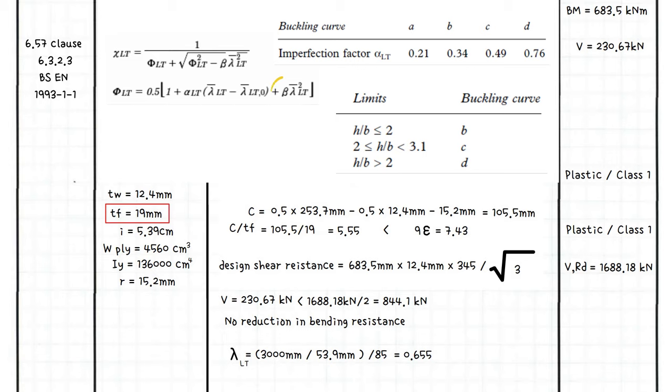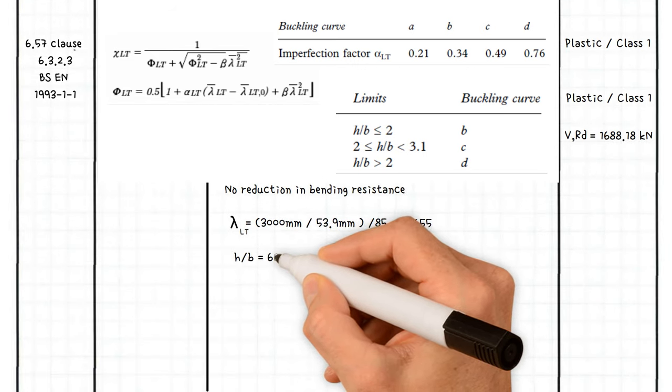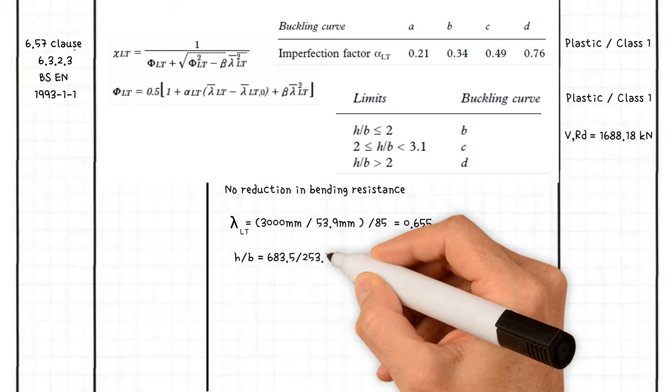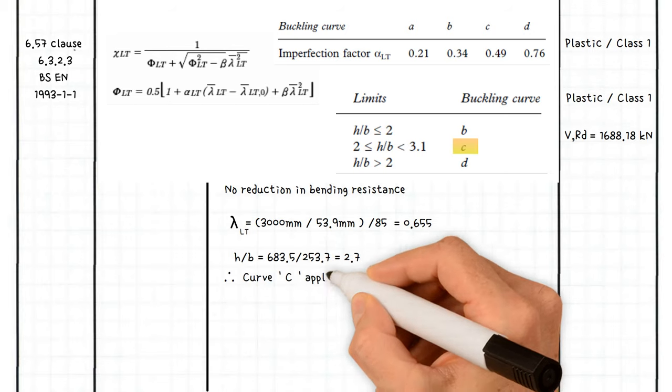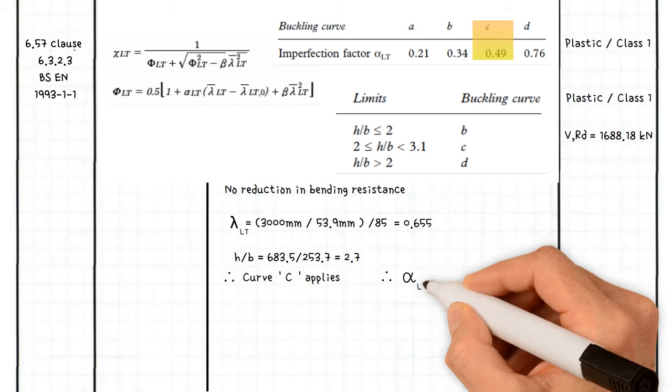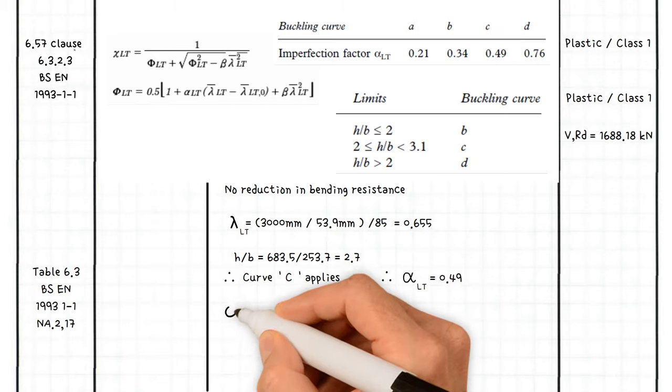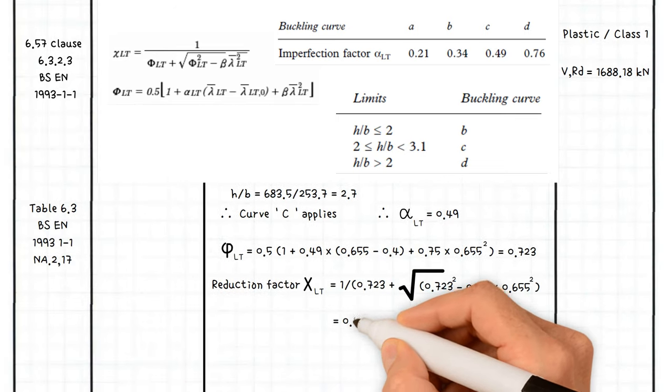The value of beta and lambda are defined as 0.75 and 0.4 respectively. Depth of the beam 683.5 millimeters divided by 253.7 millimeters equals 2.7. Therefore, Curve C applies. As a result, the imperfection factor alpha equals 0.49. Putting these numbers into our equation, then the reduction factor would be equal to 0.853.